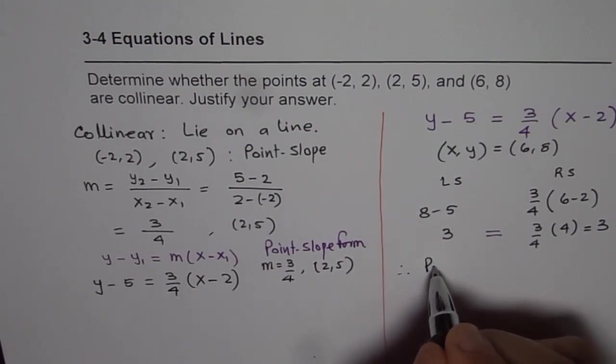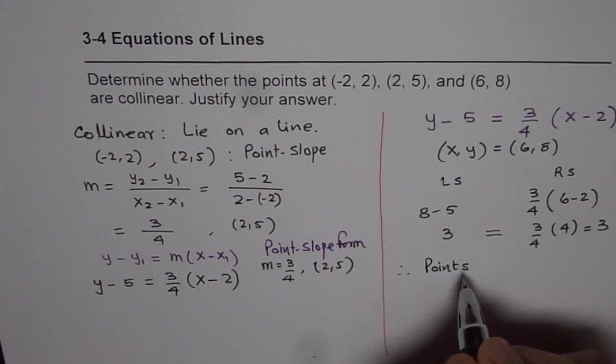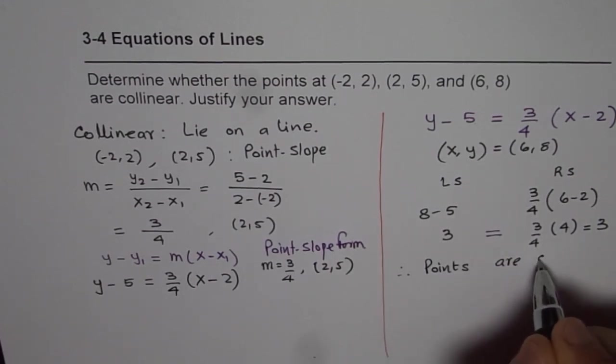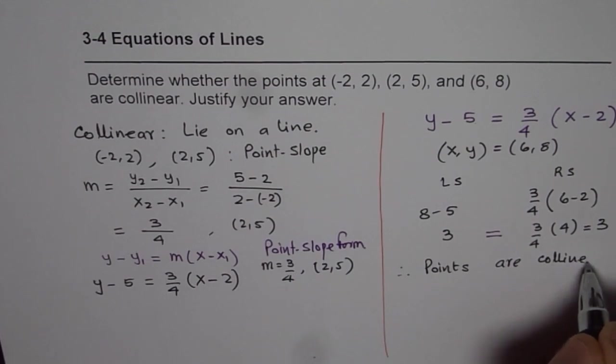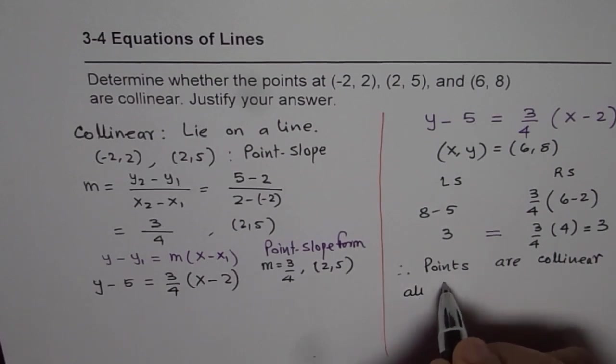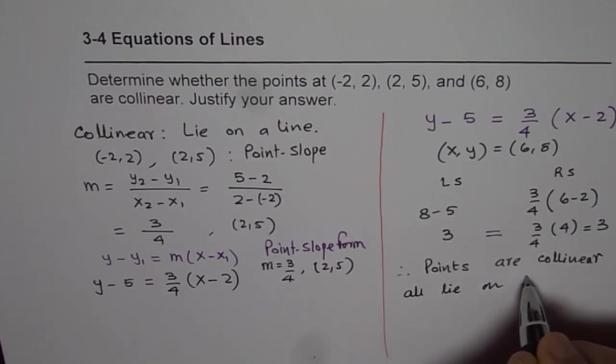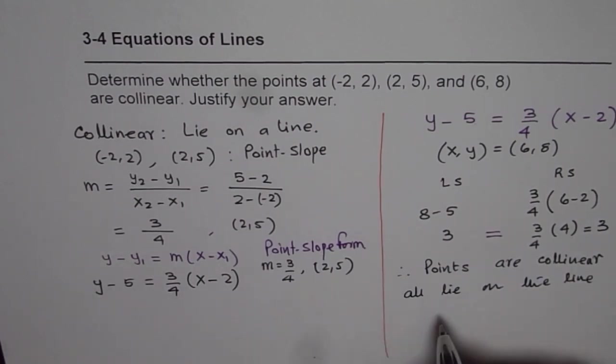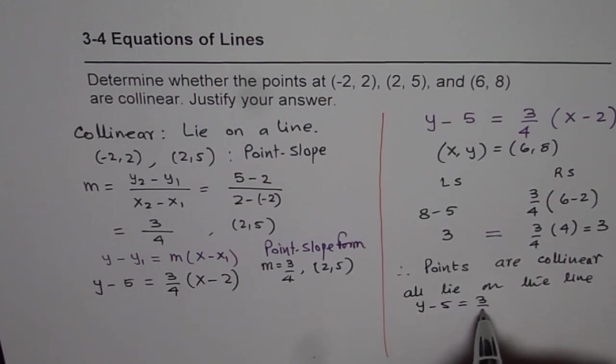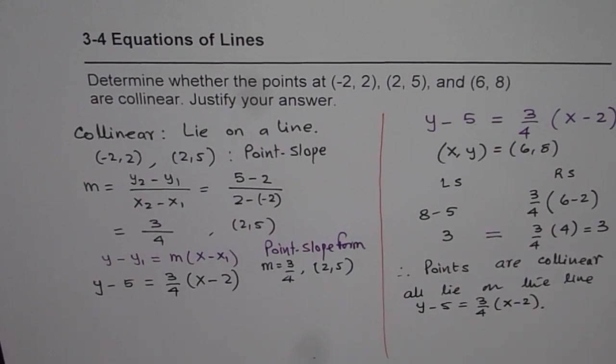Now we see that left side is indeed equal to the right side. Therefore the point satisfies the equation, and therefore we can say that the points are collinear since all lie on the same line, the equation y minus 5 equals 3/4 (x minus 2).